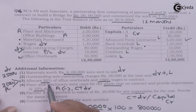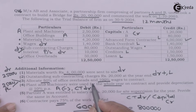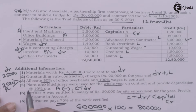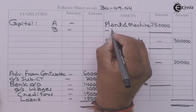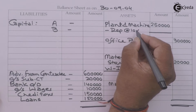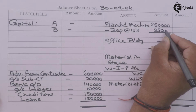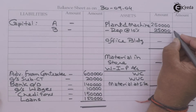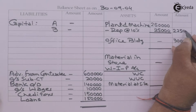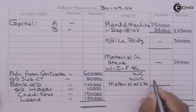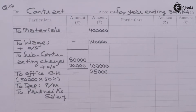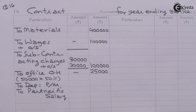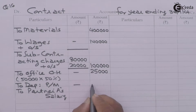Allocating 50 percent office overheads and 100 percent wages to the contract — already done. Plant and machinery were used for the whole year on contract; provide depreciation at 10 percent. This 10 percent depreciation will be deducted from plant and machinery on the asset side. The amount of depreciation is 25,000, so the written down value is 2,25,000. Since plant and machinery were used for the contract only, the whole amount will be debited to the contract account as depreciation on plant and machinery.